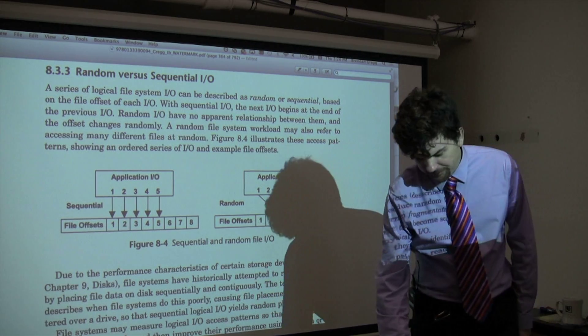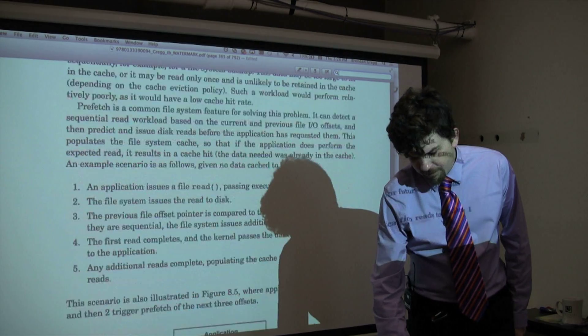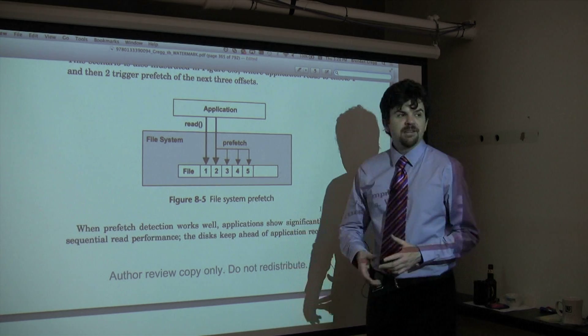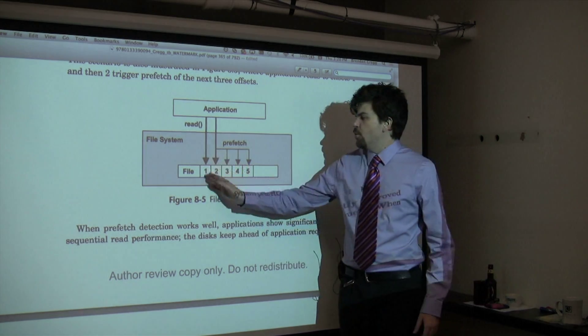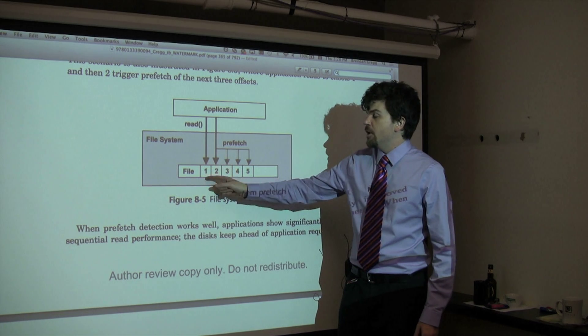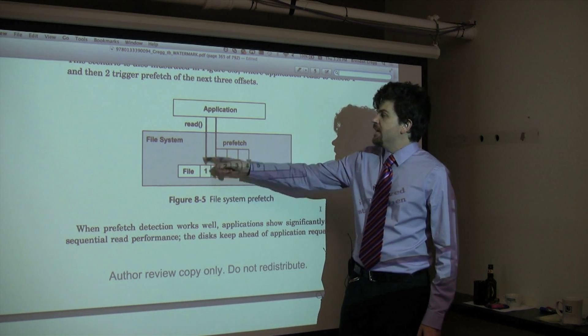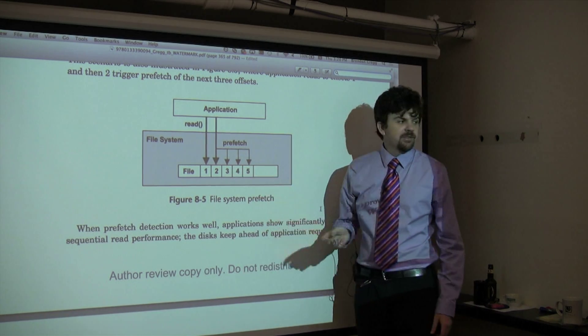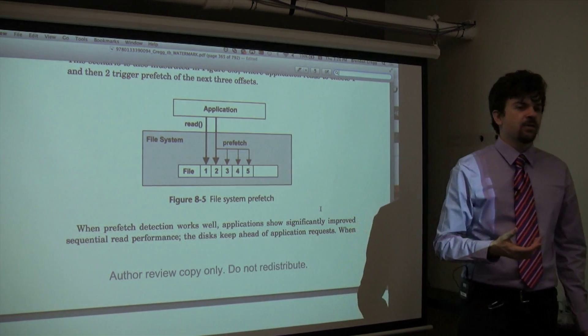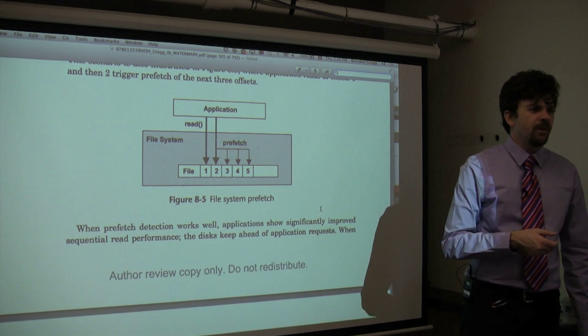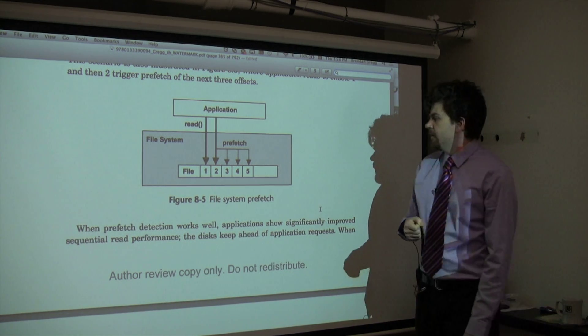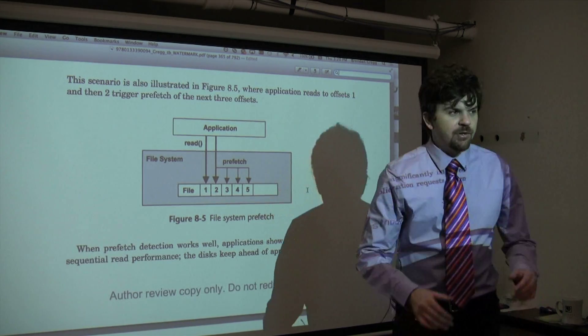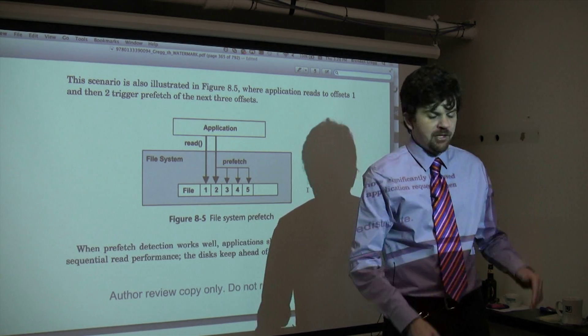And that can be really useful because the file system can then do prefetch. So many file systems do this. Another term for this is read-ahead, where I issue one file I/O to offset 1, then I do a read to offset 2, and that might trigger a prefetch of the following offsets because it thinks this is starting to look like a sequential workload. And that can improve performance because you're pre-warming up the cache before the application has requested it.